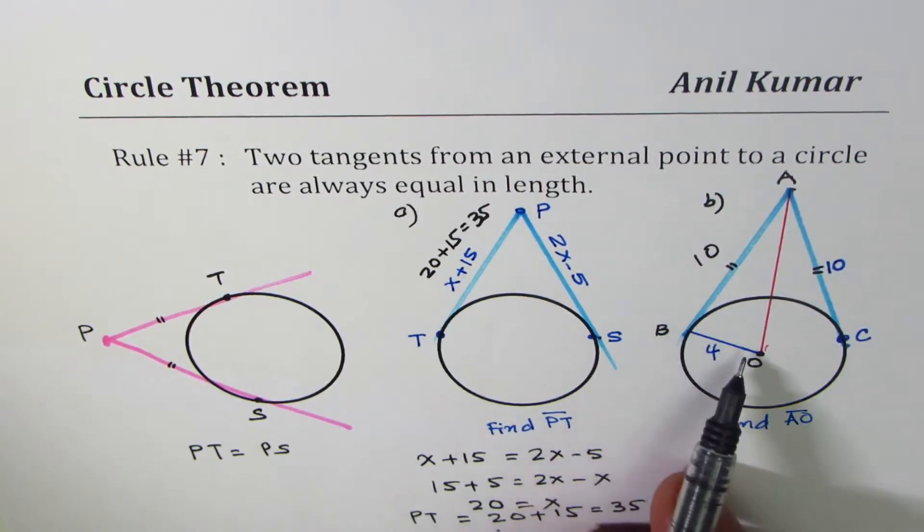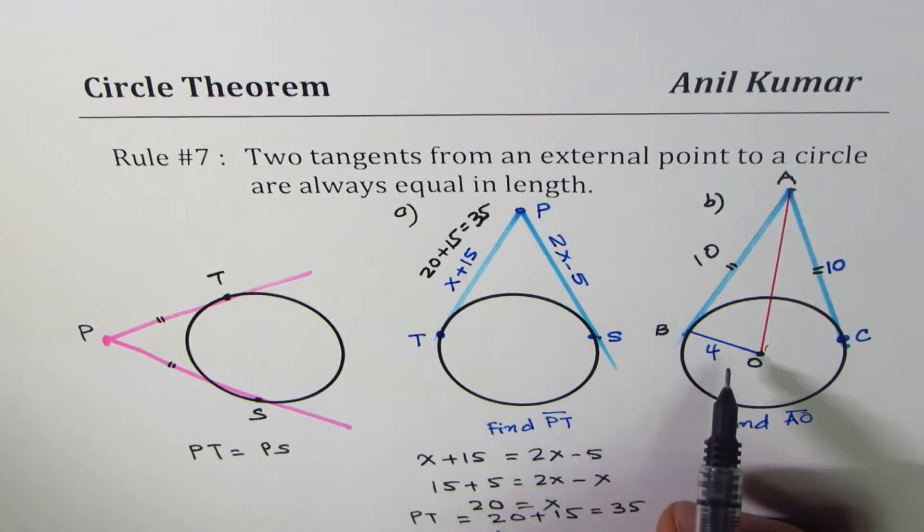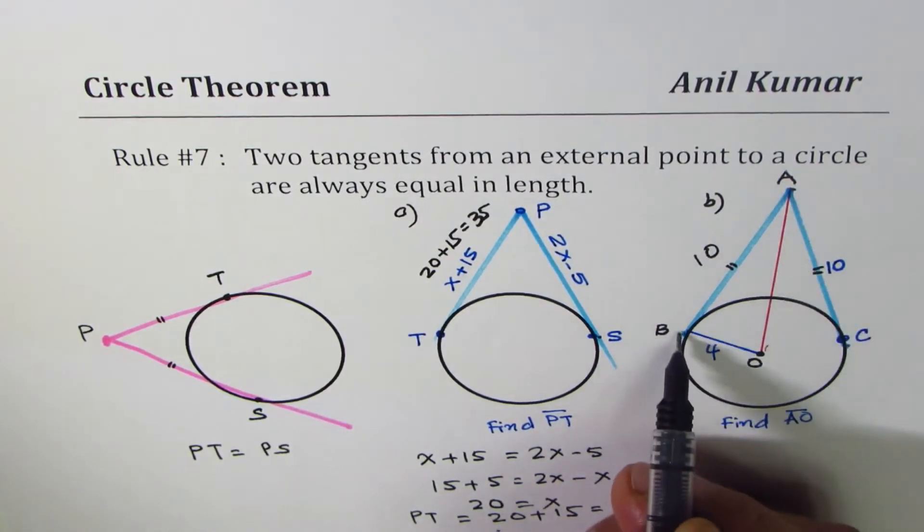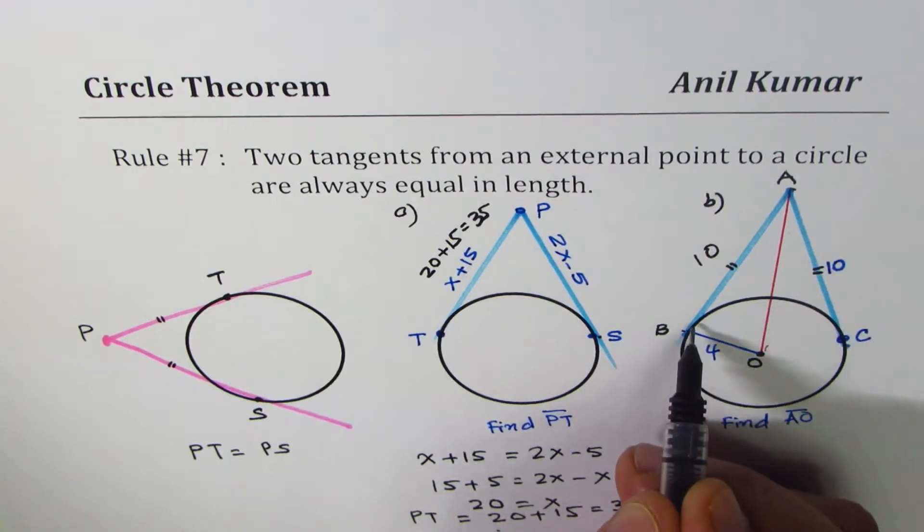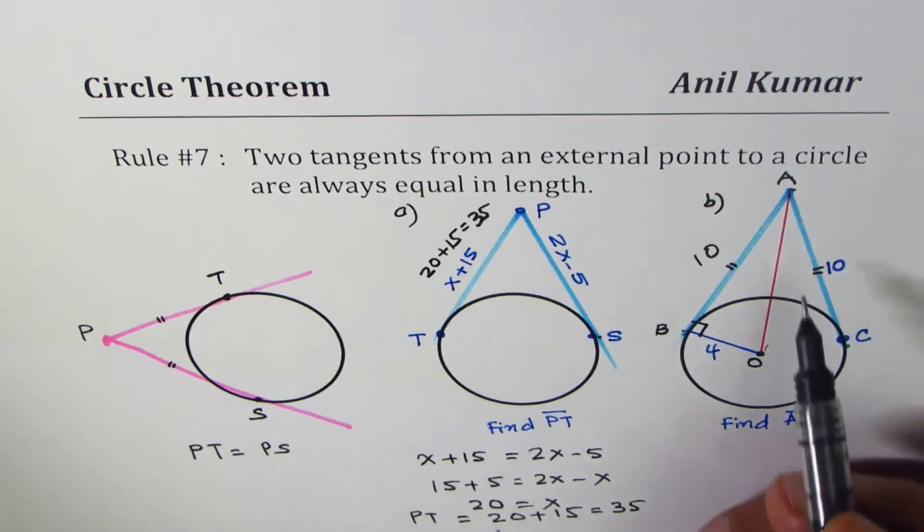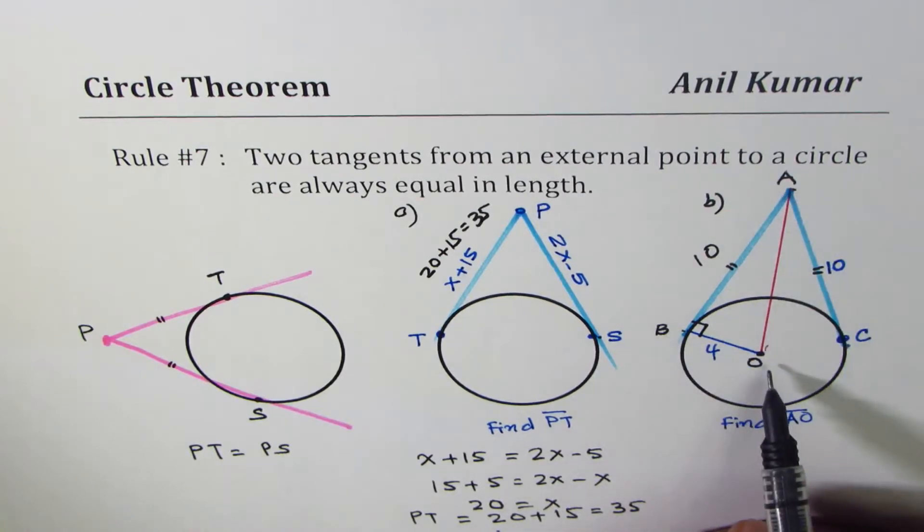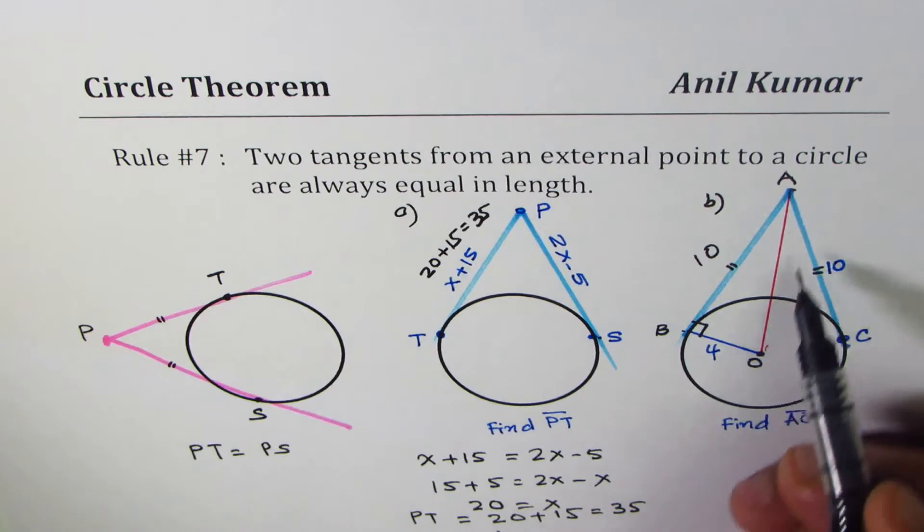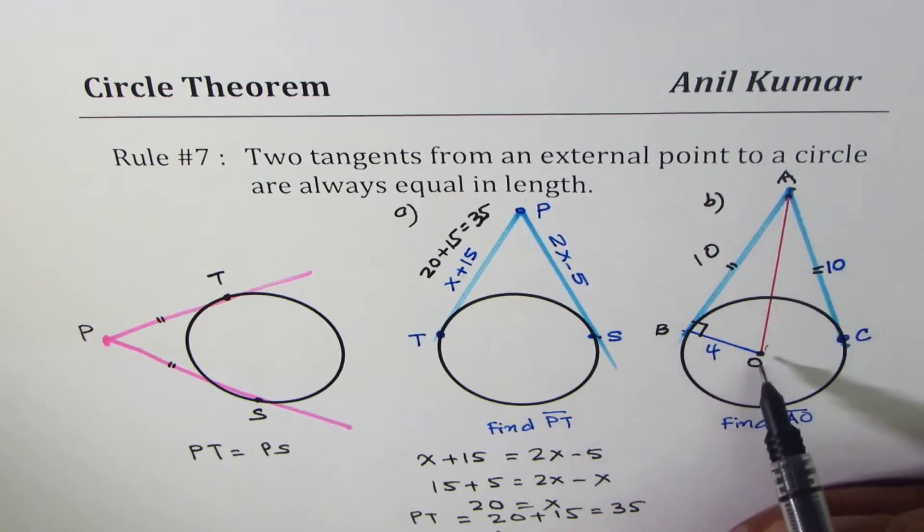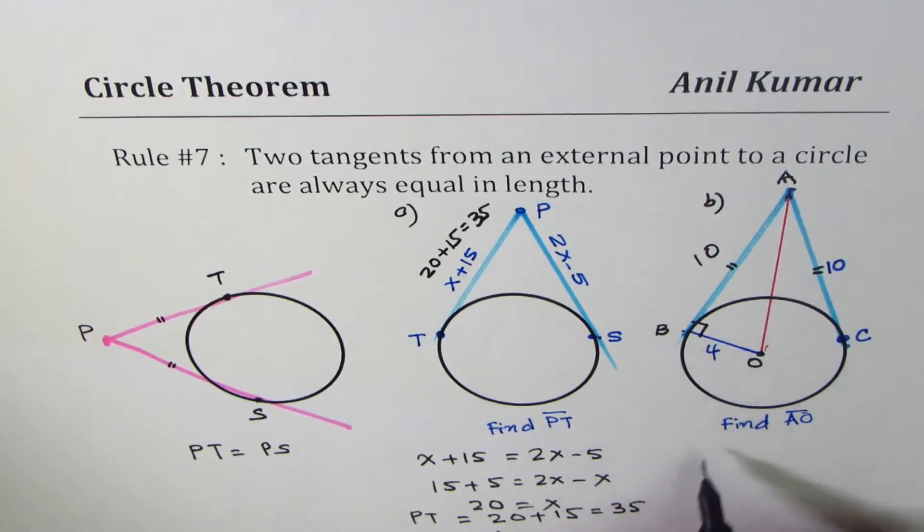We know the radius as 4, and as per rule number 6, we know that the tangent and the radius are always at right angles. So the triangle ABO is a right triangle, where AO is the hypotenuse.